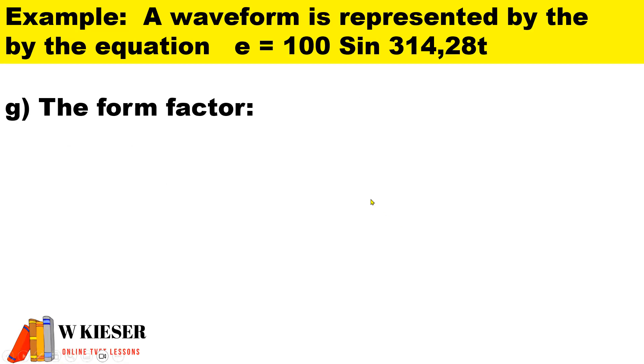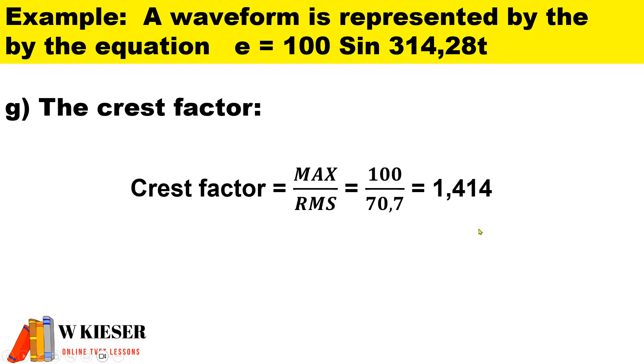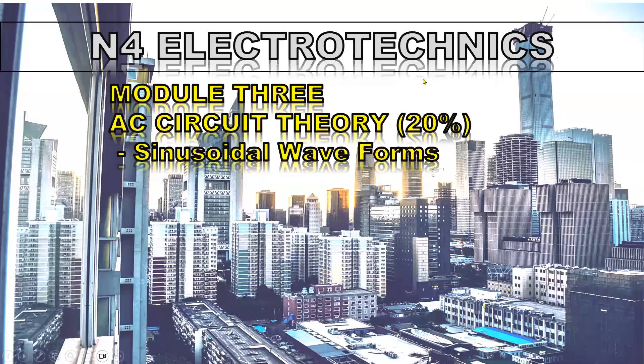In this very last question, we need to calculate the form factor. To define the form factor, it is the ratio of the RMS to the average. So we substitute the RMS value and the average value, and we end up with a ratio of 1.11. To calculate the crest factor, it is the maximum value over the RMS value, and we end up with a ratio of 1.414. Thanks for watching this video for N4 Electrotechniques.